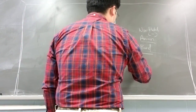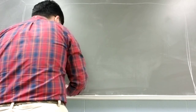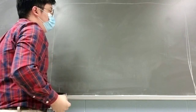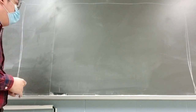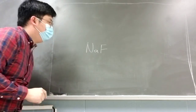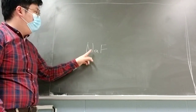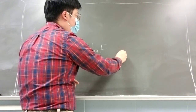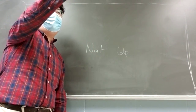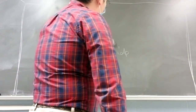Naming ionic compounds is easy — you just use the full name of the cation and change the ending of the anion to '-ide.' For example: sodium and fluorine → sodium fluoride; sodium and bromine → sodium bromide; sodium and iodine → sodium iodide, and so on.